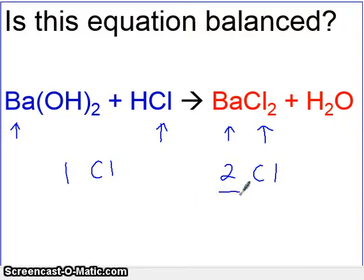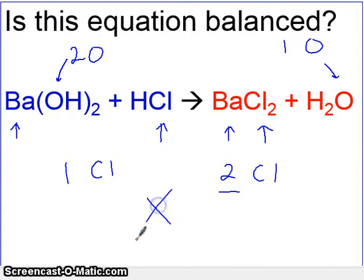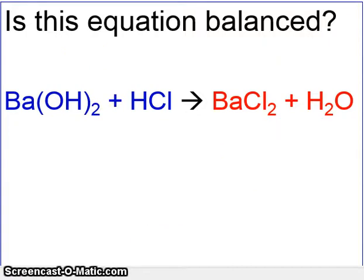If you take a look at the oxygens, we have two oxygens here — remember, this two applies to the whole thing in parentheses. We have two oxygens on the left, but only one oxygen on the right. So it looks like we've lost an oxygen and gained a chlorine. This is impossible, so this equation is unbalanced. We will balance it and show you how.